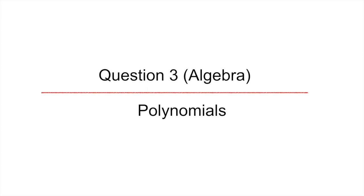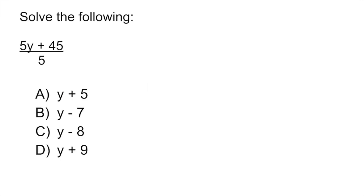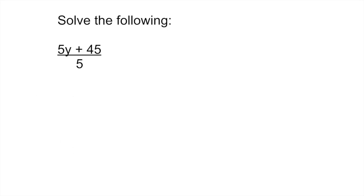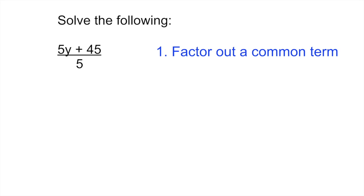Question 3 is an algebra problem looking at polynomials, specifically division of polynomials. Solve the following: 5y plus 45 divided by 5. This is a two-step problem. The first thing you want to do is factor out a common term — in this case the common term is 5. So you rewrite it as 5 multiplied by (y plus 9), which is equivalent to the original expression.